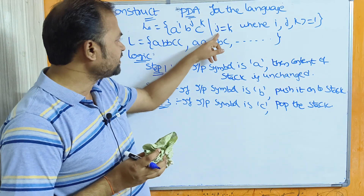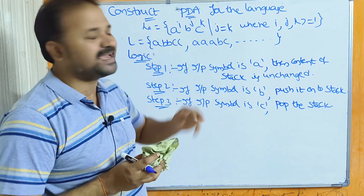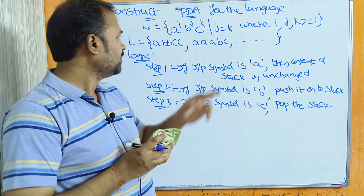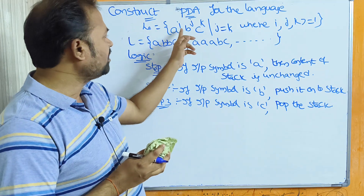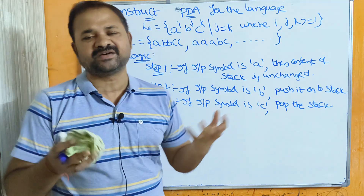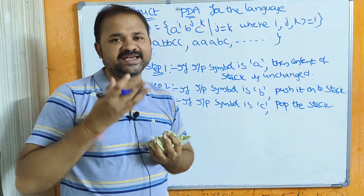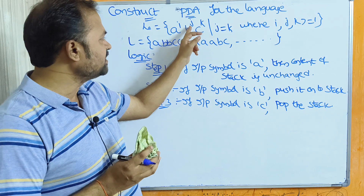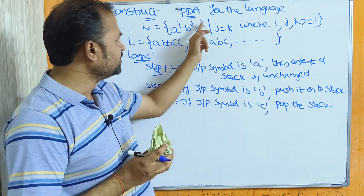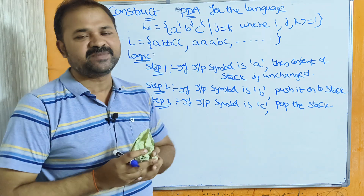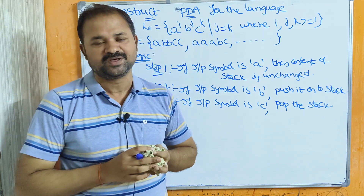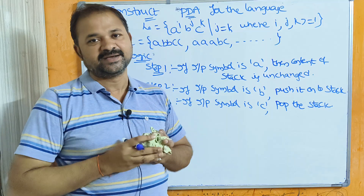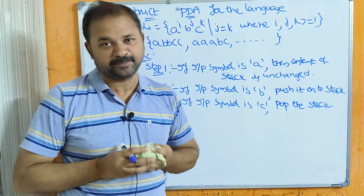Here j and k values must be the same. Regarding i, it is our choice — we can take any number of a's. j is the b value and k is the c value, so the number of b's and c's must be the same.